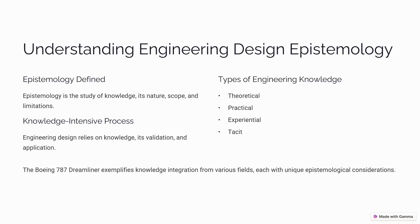The types of engineering knowledge: engineers' design relies on different types of knowledge. First is theoretical knowledge — scientific principles and mathematical models. Second is practical knowledge — engineering applications and hands-on experience. Third is experiential knowledge — lessons learned from previous projects. And fourth is tacit knowledge — intuitive skills gained through practice. For example, the Boeing 787 Dreamliner combined aerodynamics (theoretical), manufacturing techniques (practical), lessons from previous aircraft (experiential), and expert intuition to develop an innovative aircraft.